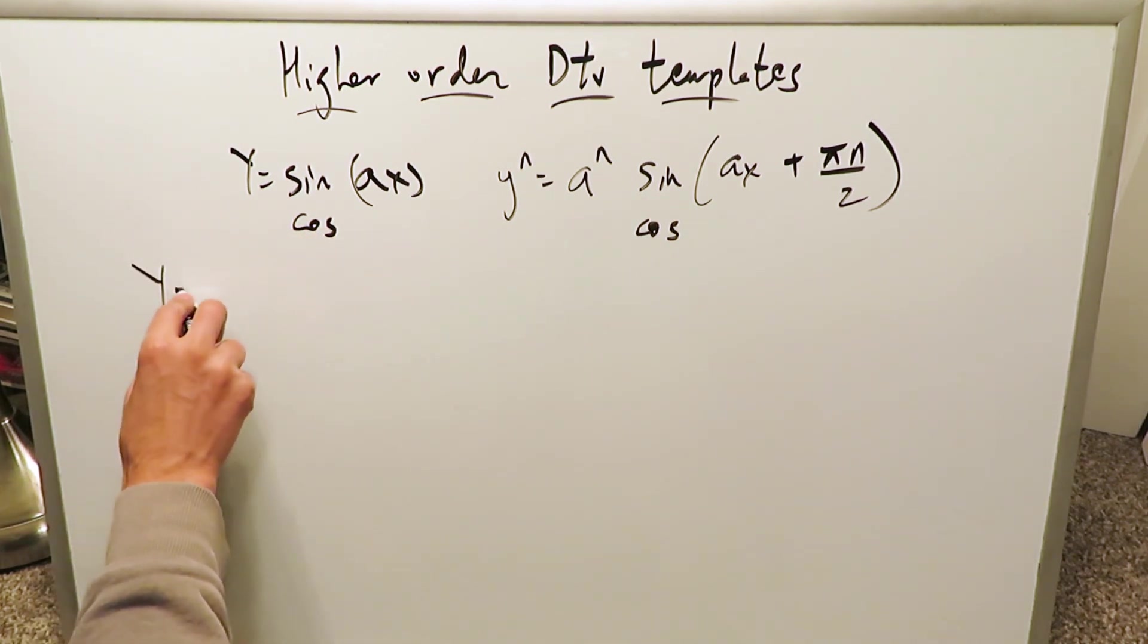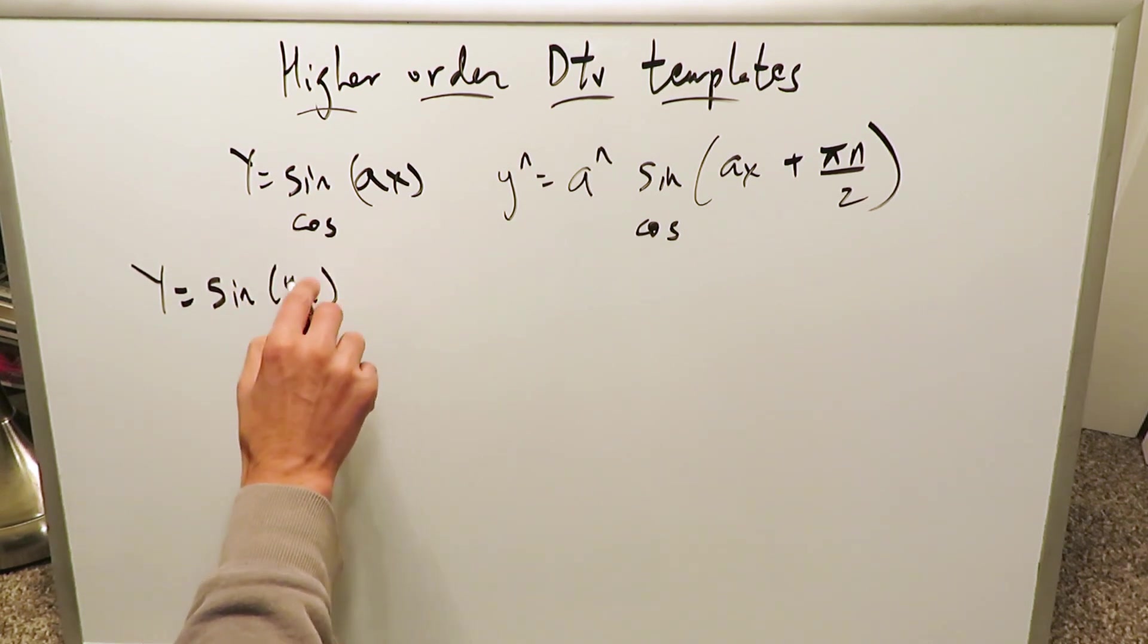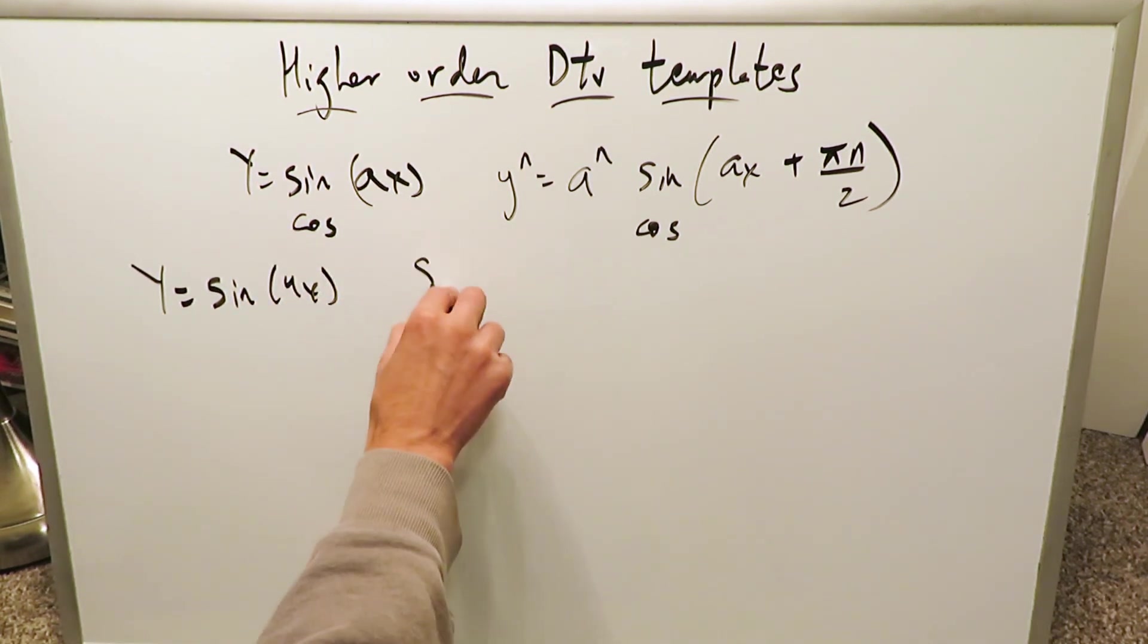If my original function is y equals sine let's say 4x, I want to determine the fifth order derivative right here. How would I do it?